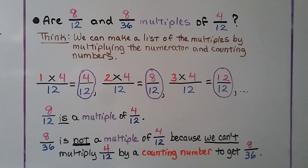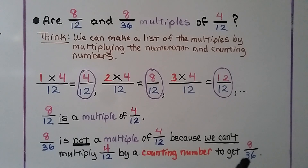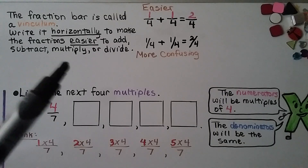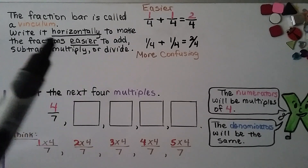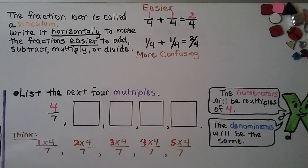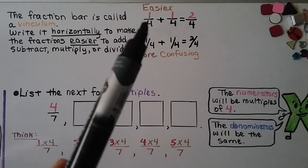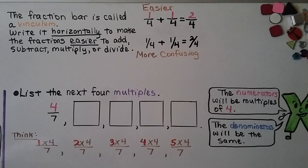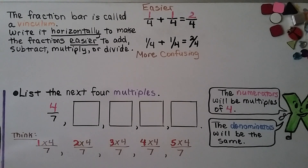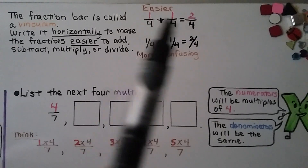As extra information: the bar separating the numerator and denominator is called a vinculum, but you can call it a fraction bar. Writing it horizontally makes it easier to add, subtract, multiply, or divide fractions, because you can go straight across. As you get into higher grades, algebra, and middle school, you'll appreciate having the fraction bar written horizontally.